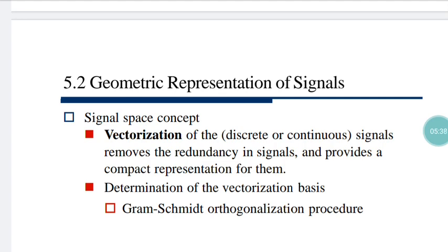Generally, what Gram-Schmidt does: you are given some basis — say B1, B2, B0 — and the vector you have to find, that orthonormal basis, is given as V. You have to find the orthonormal basis alpha-1, alpha-2, alpha-3. There is a particular rule to convert the given basis to alpha-1, alpha-2, alpha-3. In a separate slide, I have given a detailed numerical example solved using the Gram-Schmidt criteria, and I will come to it later.